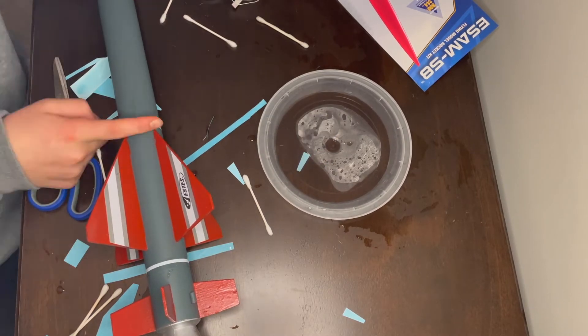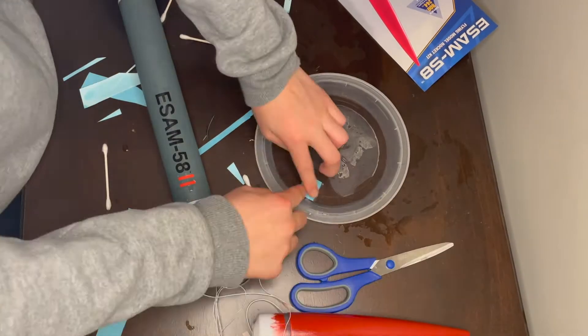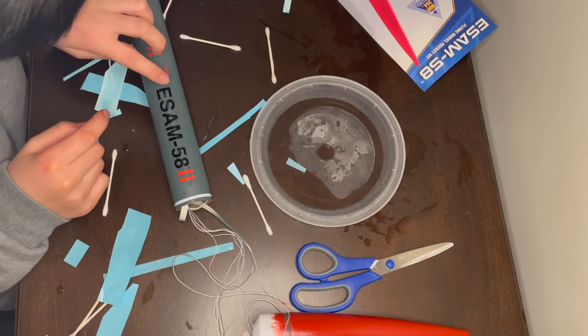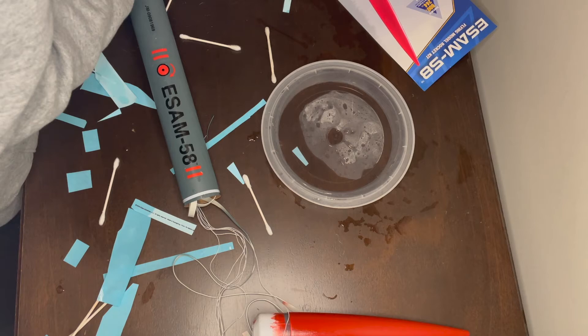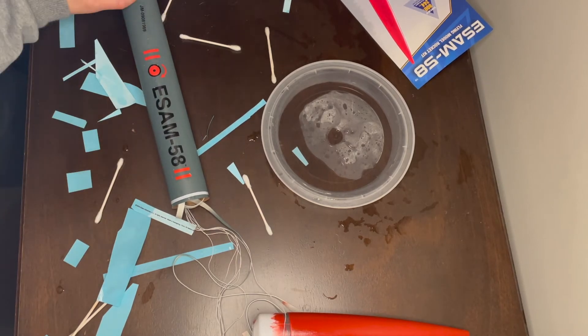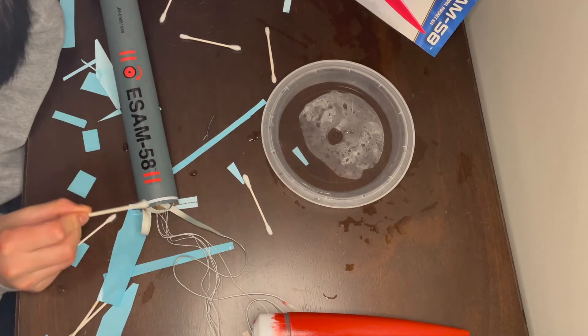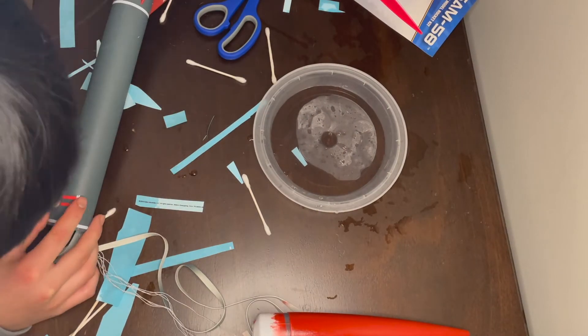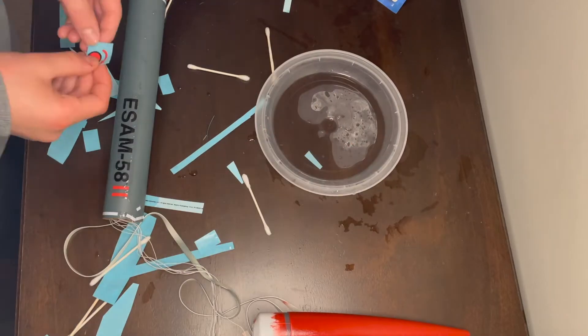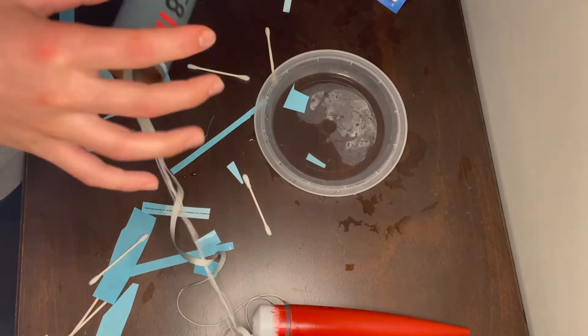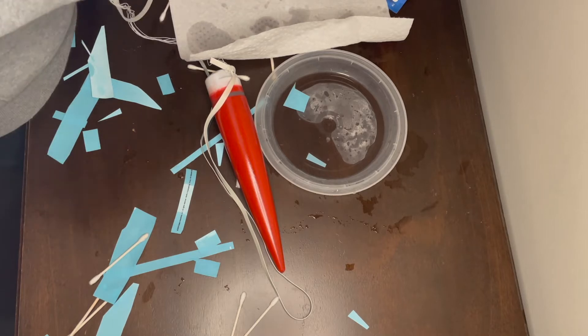Right now I'm putting on the decals that say E SAM 58 with the two red lines. This one, I kind of got impatient because for the other ones I used a q-tip to spread it out and let it dry, but instead of letting it dry I just moved on to the next side. When I was holding the next side, the other side moved and then I had to keep doing it over and over again. That was very stressful and probably took up a lot of time too.